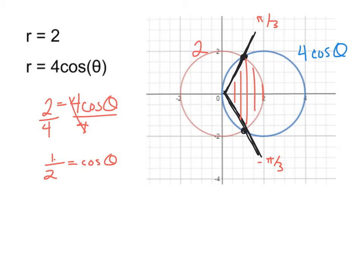Okay, so that's where they're going to intersect each other. So if I were to set this integral up for that red area, just for the part that I've blocked in right here, I would say that that is 1 half the integral of r squared d theta. And I would say it's from negative pi over 3 to positive pi over 3.